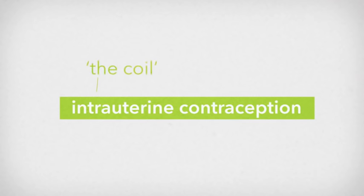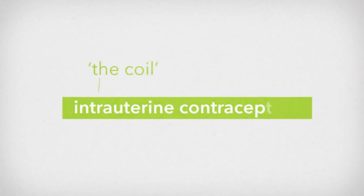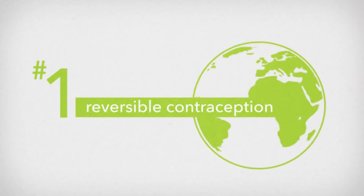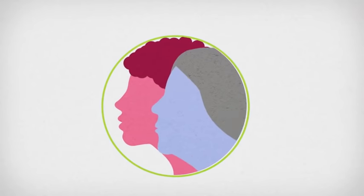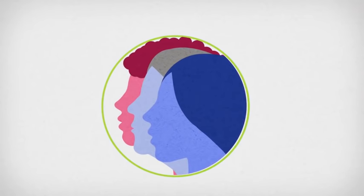Intrauterine contraception, sometimes known as the coil, is the most popular method of reversible contraception in the world and is suitable for women of all ages, backgrounds and circumstances.